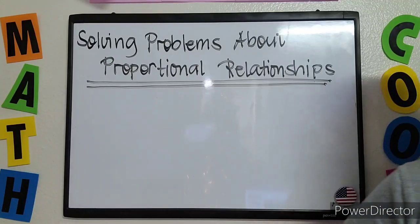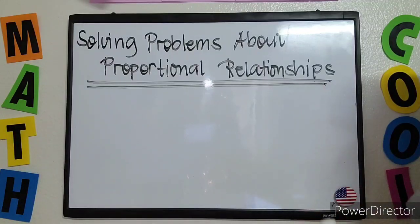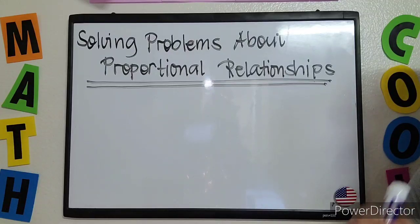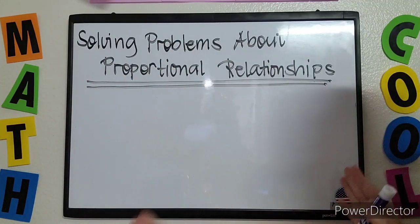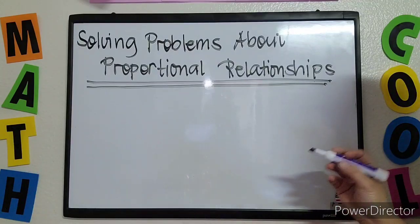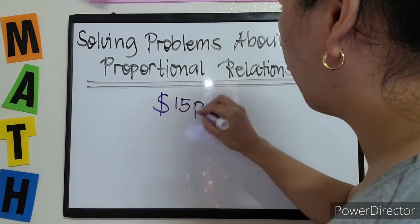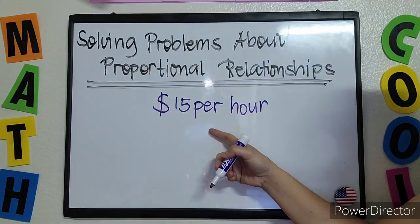Let's start with our first objective. How are you going to write an equation out of a given situation or word problem? The hint or the clue is that you have to check the given unit rate. For example, you have a very long word problem — all you have to do is check for the unit rate. For example, the given unit rate is $15 per hour. This is what you need in writing your equation.